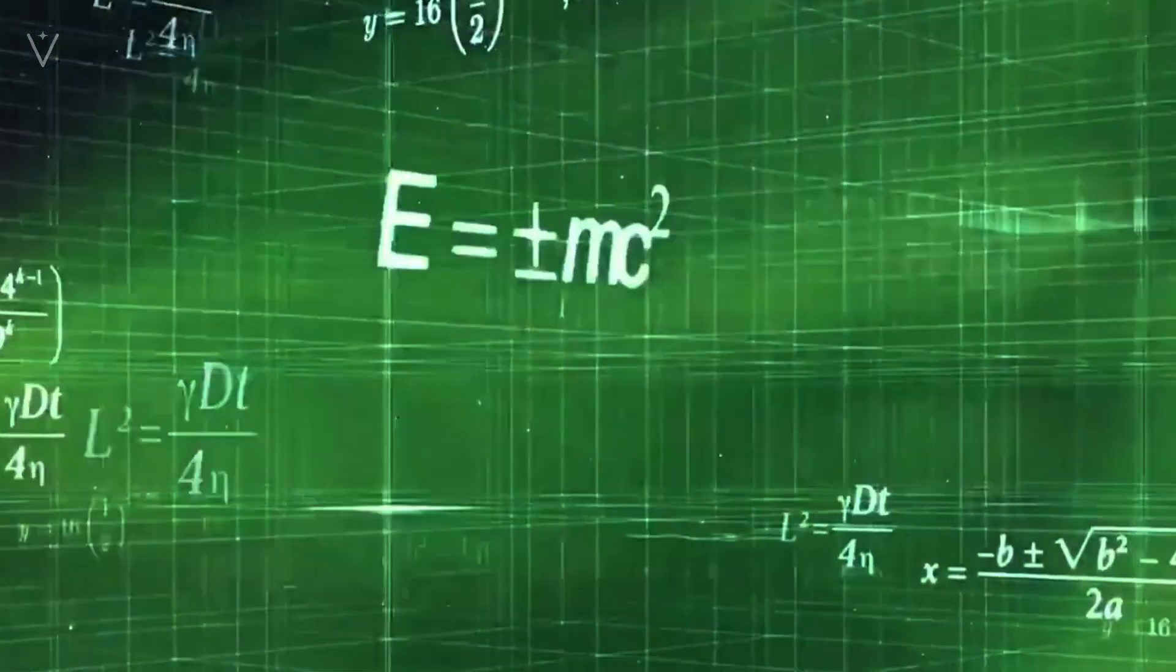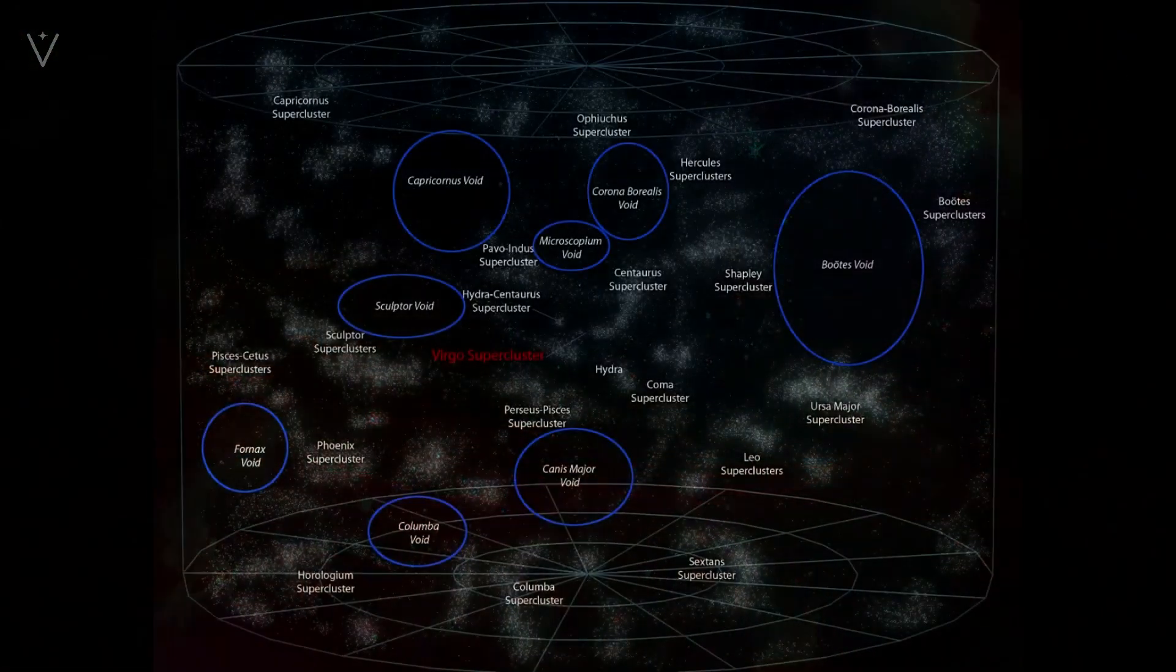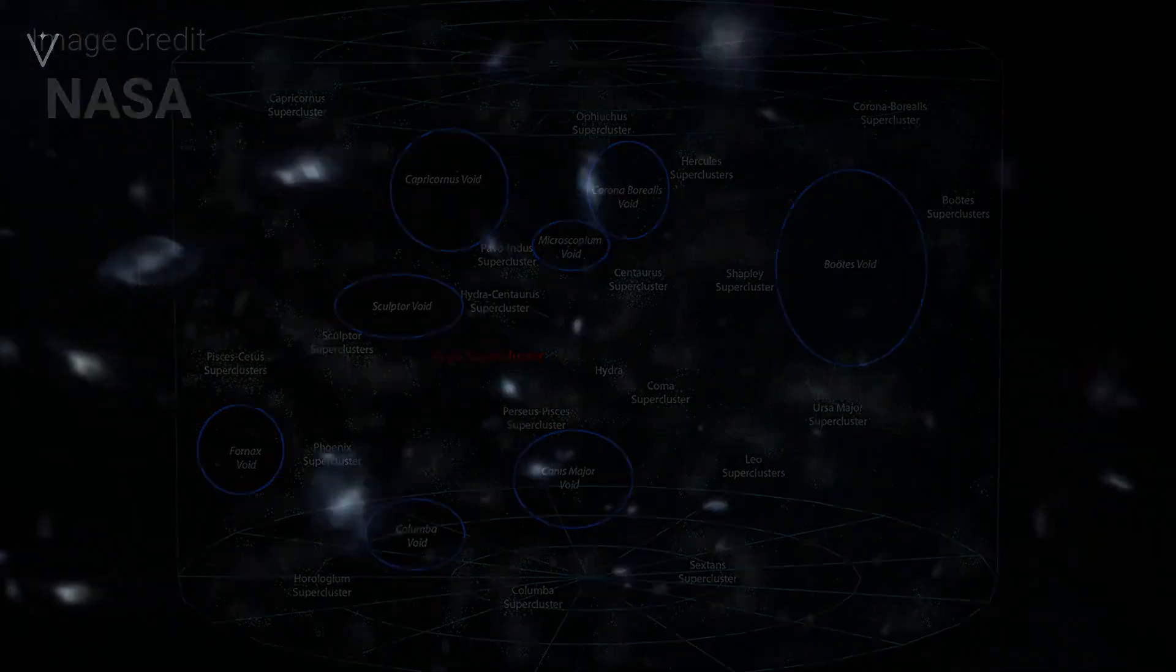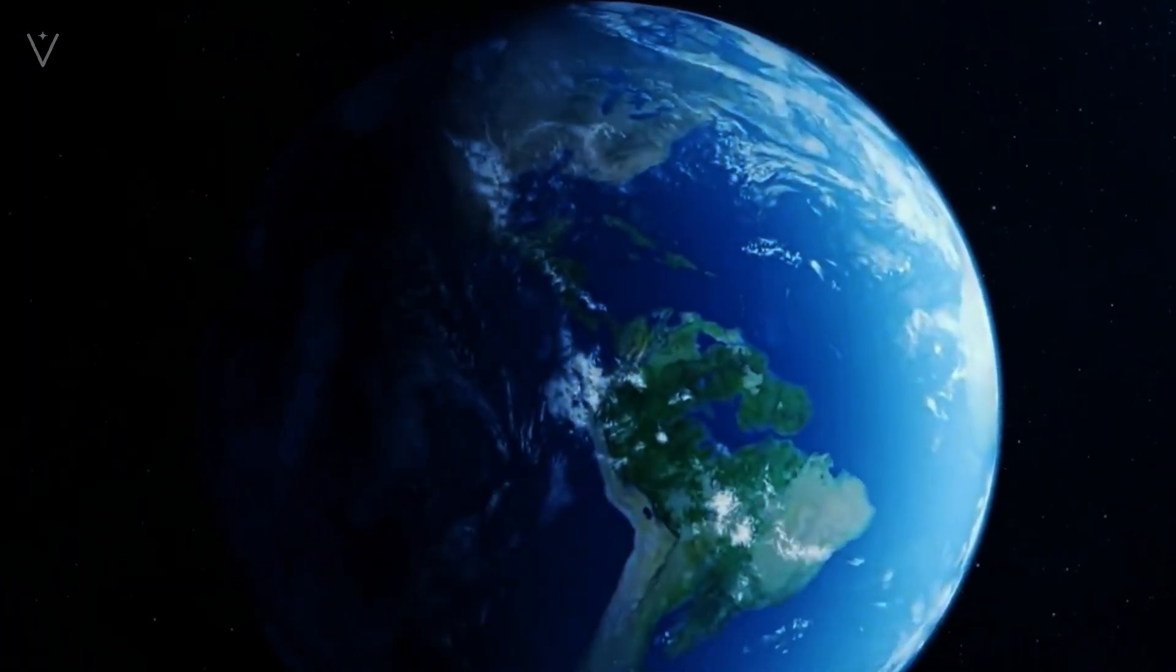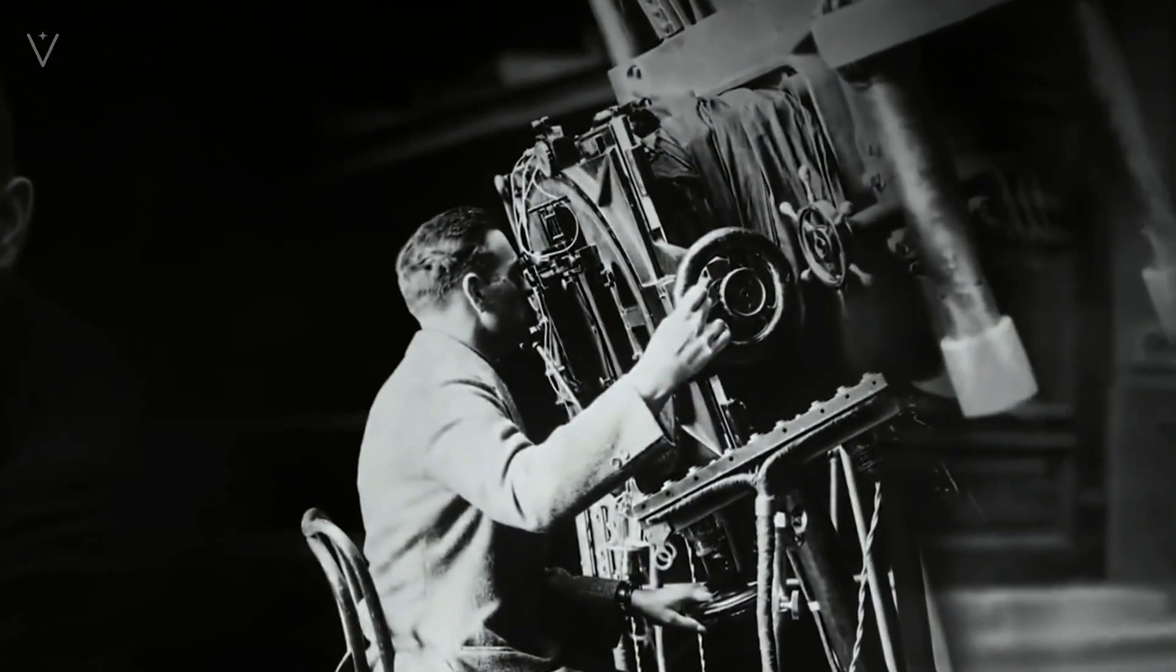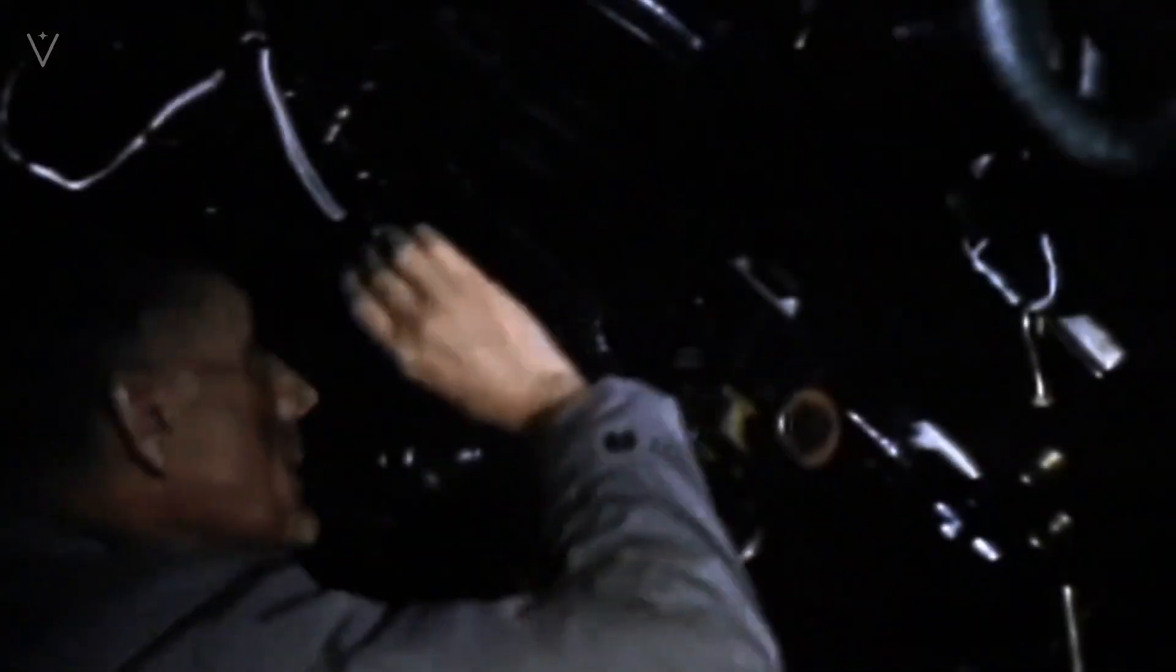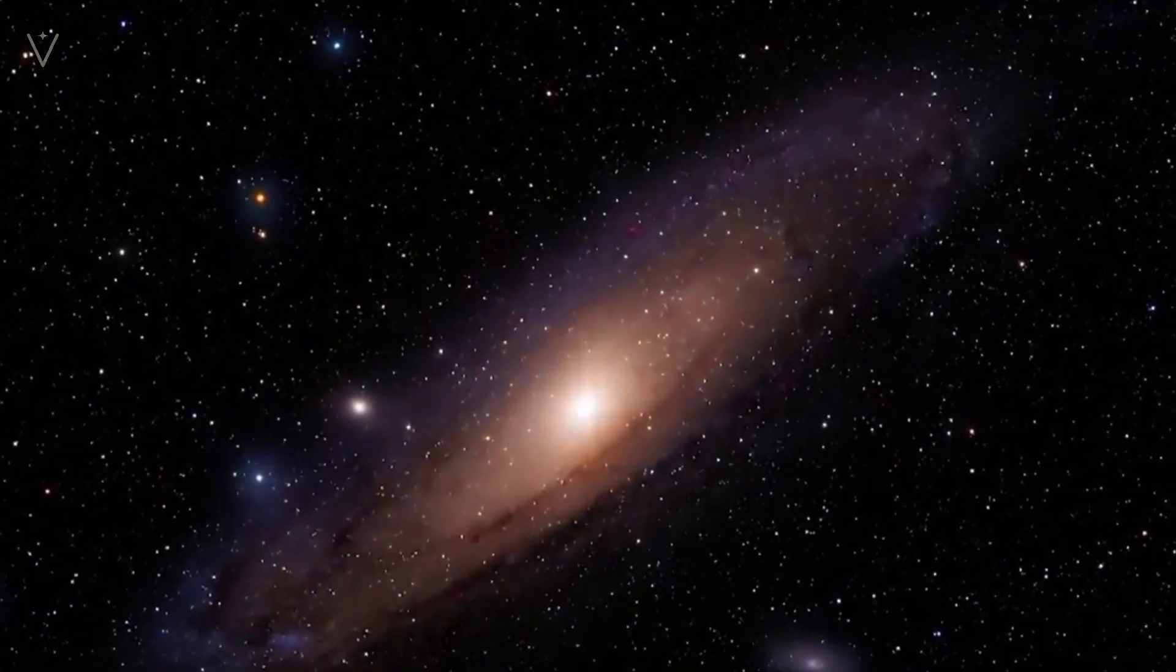However, according to the Big Bang Theory, the most influential theory in modern cosmology, our universe is in an accelerated expansion at a speed faster than the speed of light. Does this violate the current situation? According to Einstein's theory of relativity, the speed of any object with mass cannot exceed the speed of light. But why does the expansion of the universe exceed the speed of light?